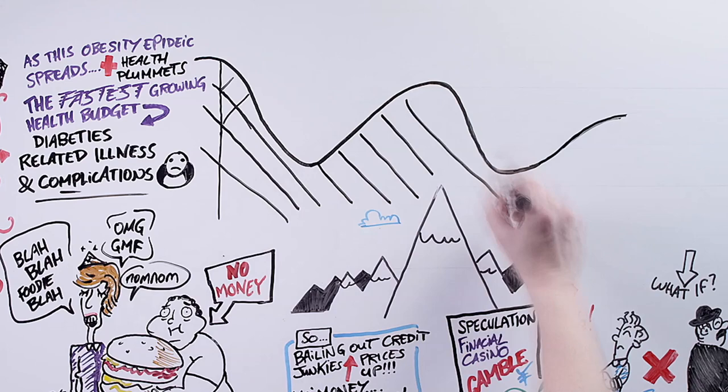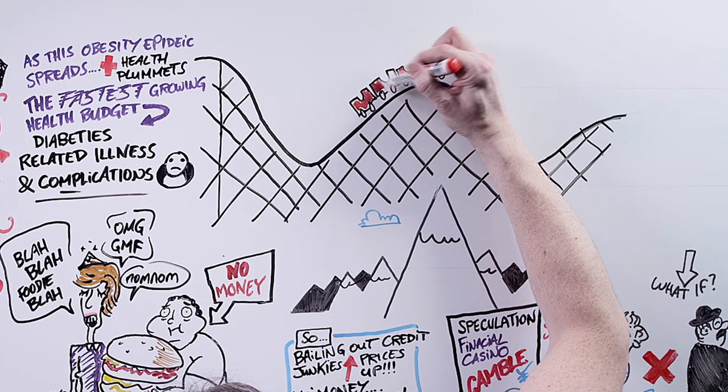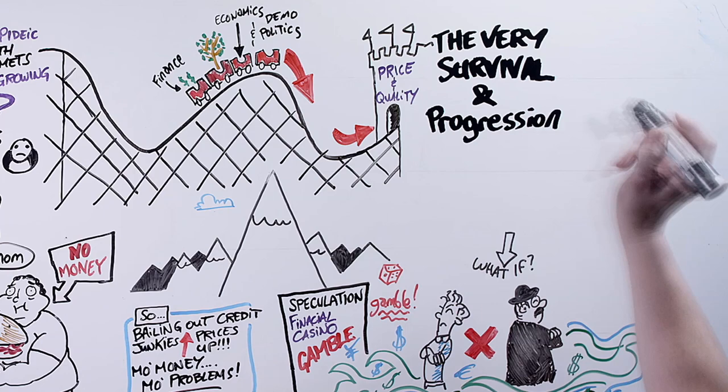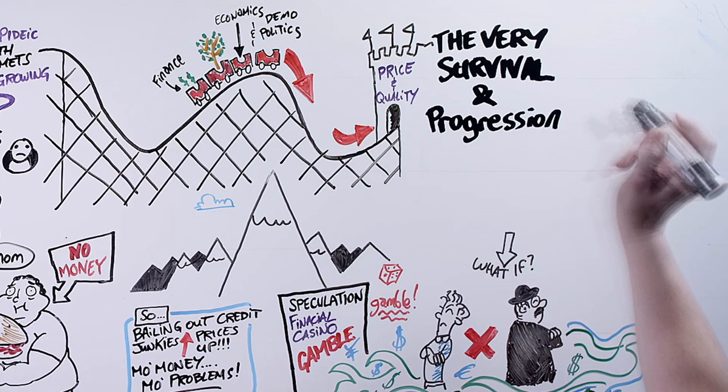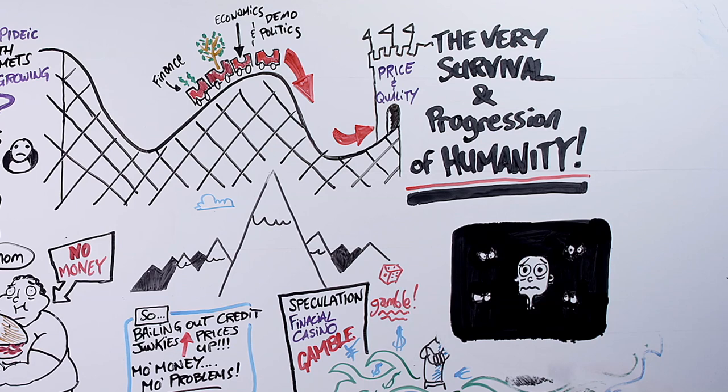This, ladies and gentlemen is where the food challenge of the next 30 years is taking us. It is a roller coaster where finance and ecology meets economics, demography and politics and where the outcome is not just about the price and the quality of the food in our shops or at our tables but the very survival and progression of humanity in a world where billions of people want what you have and might be prepared to do anything politically, militarily or financially to achieve this.